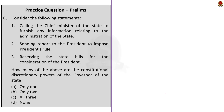The third question gives three statements and asks how many are constitutional discretionary powers of the governor. Statement one — asking the Chief Minister to furnish any information relating to administration of the state — is a constitutional discretionary power of the governor. Statement two — sending a report to the president to impose President's Rule — is also correct. Statement three — reserving the state bill for the consideration of the president — is also a constitutional discretionary power. The correct answer is option C, all three.